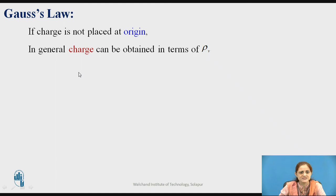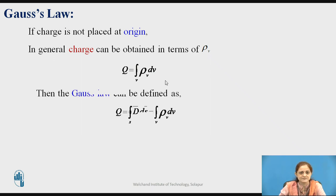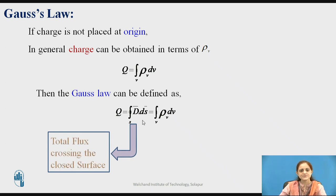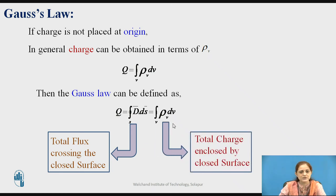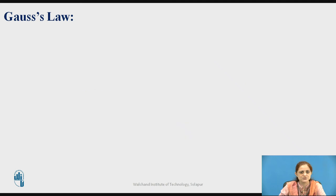If the charge is not placed at the origin, in general the charge can be represented in terms of the volume charge density. When a volume is considered, the charge can be calculated by the integration of rho-v dv. Then Gauss law can be defined as: Q equals the integration of D-bar dot dS-bar, and in terms of differential volume it equals the integration of rho-v dv. Therefore, the integration of D-bar dot dS-bar equals the integration of rho-v dv, where D-bar dot dS-bar represents the total charge enclosed by the closed surface.